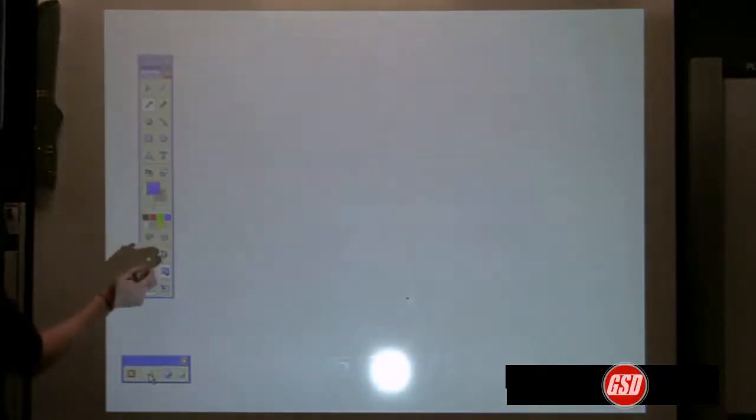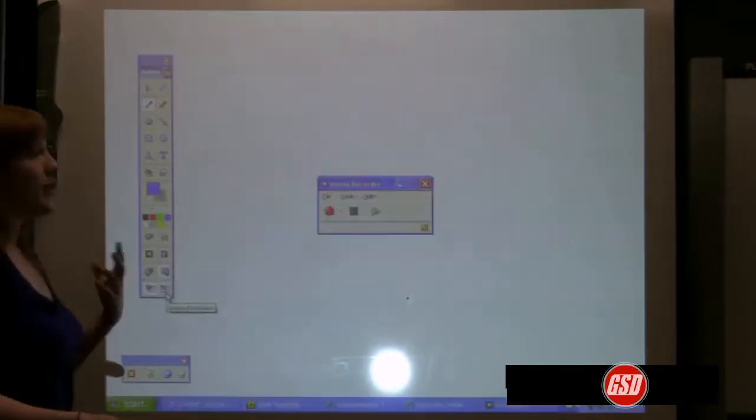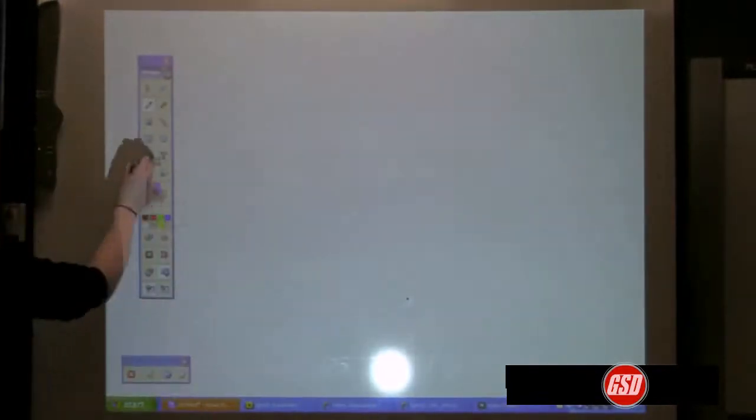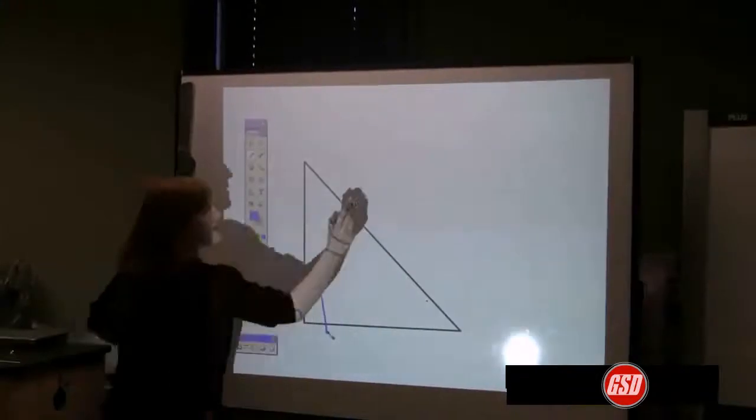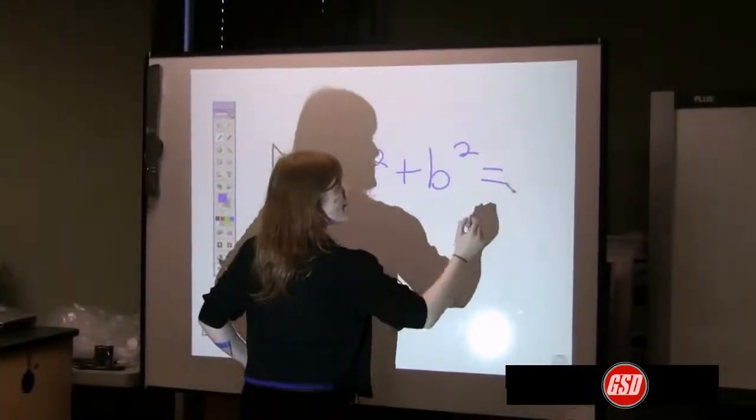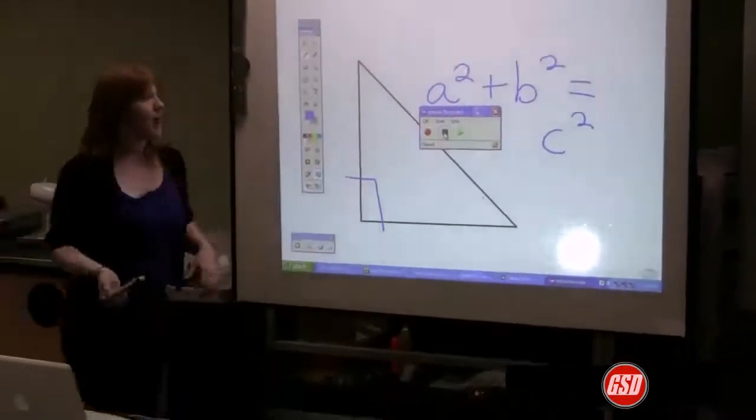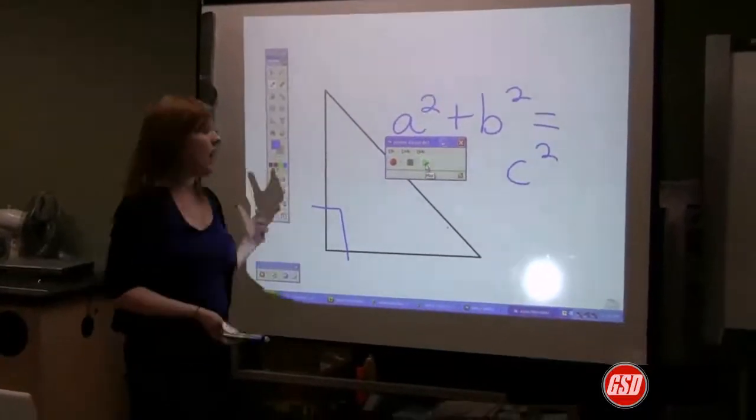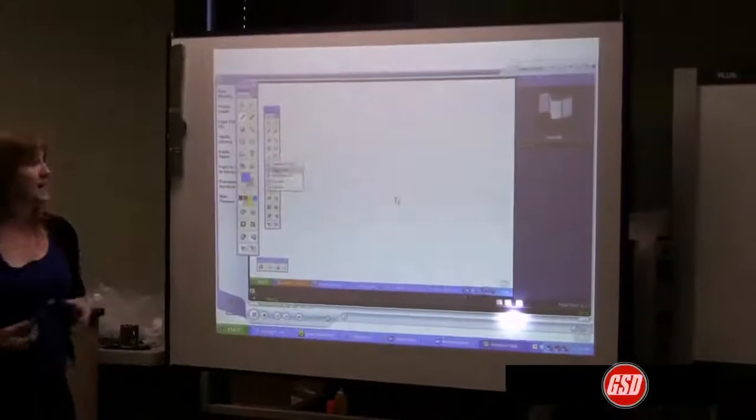Then we also have a record option. When you use your recorder, you're basically recording a little video clip of everything that you're working on. So maybe I want to bring up a little triangle and say A squared plus B squared equals C squared. You can pause. And now what you just did on the board has been recorded as a little video clip. So it's going to be an AVI file on a PC and it's going to be an MP4 on a Mac.